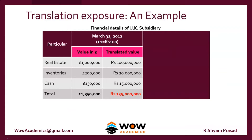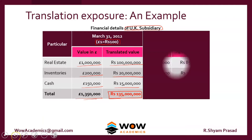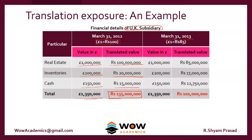Consider an example: an Indian company invests in a UK subsidiary, investing 13.5 crore rupees — 10 crore for real estate, 2 crore for inventory, and 1.5 crore for cash. When converted into UK currency, this becomes 10 lakhs for real estate, 2 lakhs for inventory, and 1.5 lakhs for cash, totalling 13.5 lakh pounds. After one year, on 31st March, the exchange rate changes from 1 pound equals 100 rupees to 1 pound equals 85 rupees.